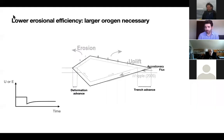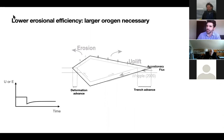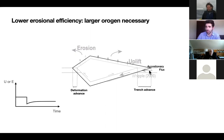Erosion decreases when, for example, climate gets drier, or when you uplift the altiplano where there's no precipitation on top of it anymore, and then you basically shut down erosion. In these cases, because we have the same amount of mass going through but slower erosion, the orogen grows wider until it reaches a steady state, and we would expect a decrease in erosion rate.